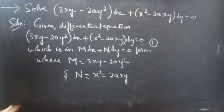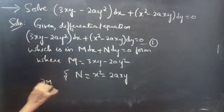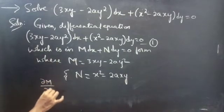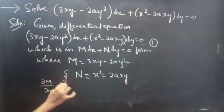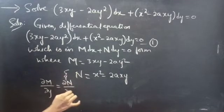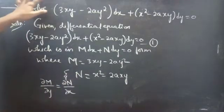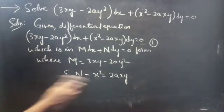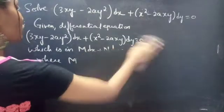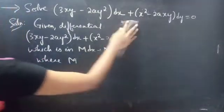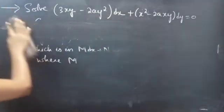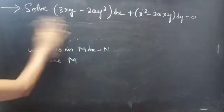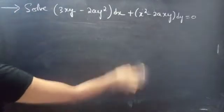If the partial derivative of M with respect to y equals the partial derivative of N with respect to x, then the given differential equation is an exact equation. So let's find the partial derivative of M with respect to y and N with respect to x.